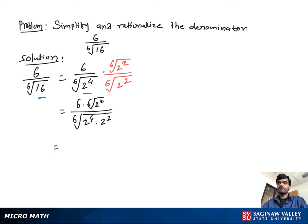Then we get 6 times the 6th root of 4 over 2. Then 6 divided by 2 is 3, so you get 3 times the 6th root of 4, and this is our final answer.